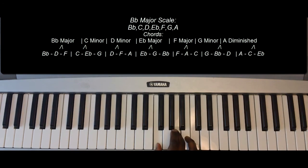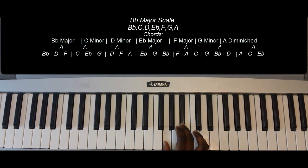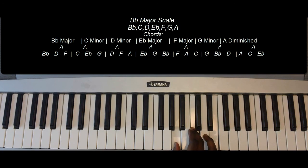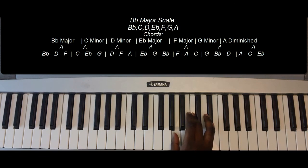F-major: F, A, C. G-minor: G, B-flat, D. A-diminished: A, C, E-flat.